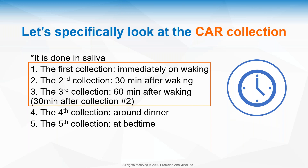This rapid collection makes blood draws impractical — nobody wants three blood draws in the morning, and you can't do a blood draw on waking. Urine collection doesn't work either: most people can't urinate three times in 60 minutes, and urine has a time delay through the kidneys and bladder. So saliva is the right choice. We also do a fourth collection around dinner and a fifth at bedtime, paired with dried urine information for comprehensive data.